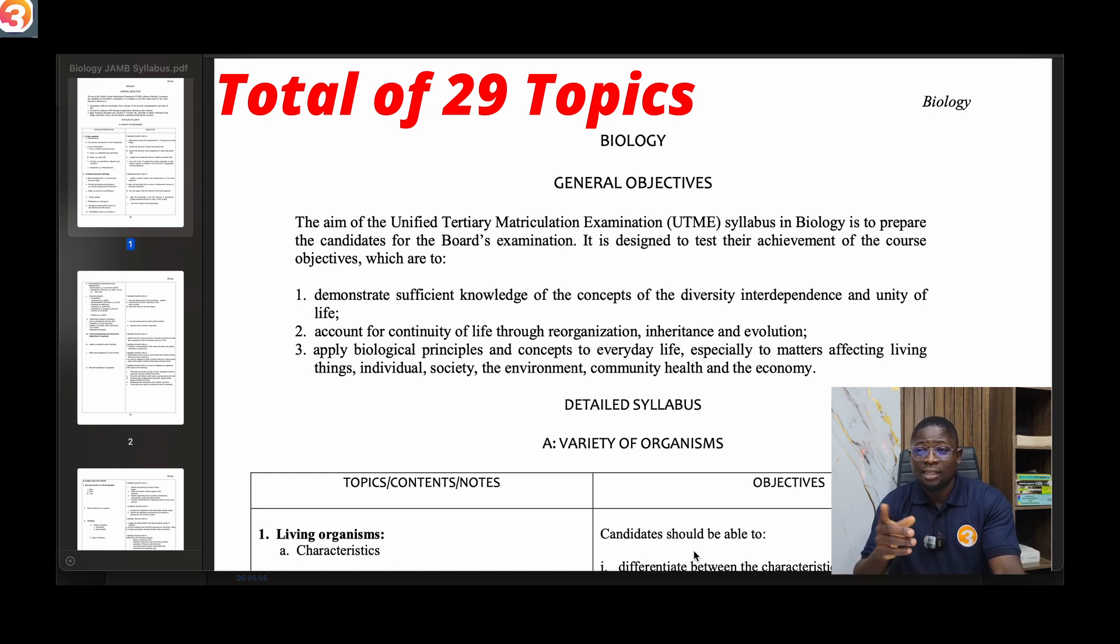JAM biology topics can be kind of broad, so you have to make sure that you are up and running. Those 29 topics, if you are taking one a day, that means in 29 days you'll be able to complete your full biology syllabus. But because of how large some of those topics are, it may be difficult for you to finish all the topics within a month.